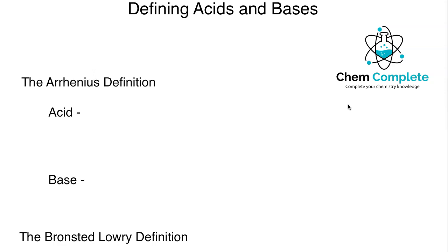Alright, so let's get started. Acid and bases: how do we define acids and bases in chemistry? Well, there's three major definitions: the Arrhenius definition of an acid or base, the Bronsted-Lowry definition, and then finally the Lewis definition.